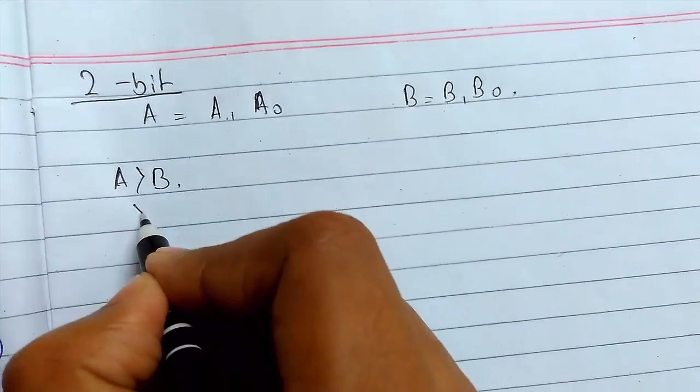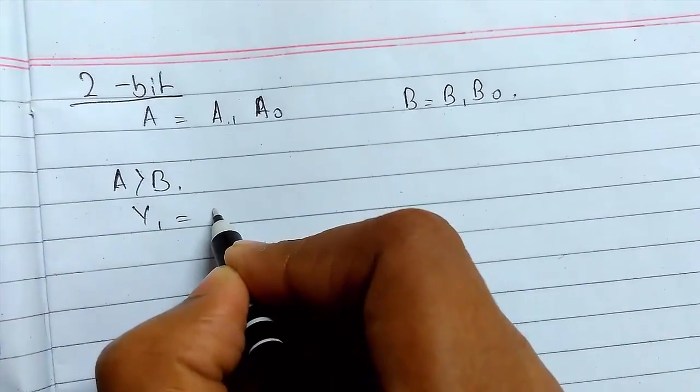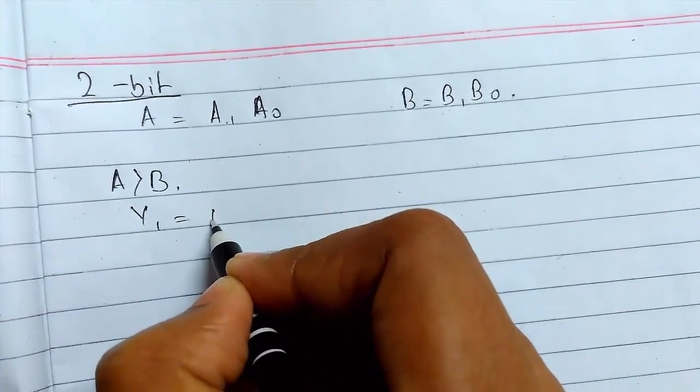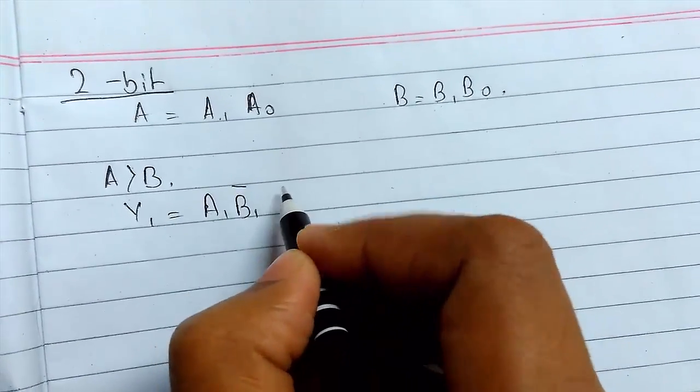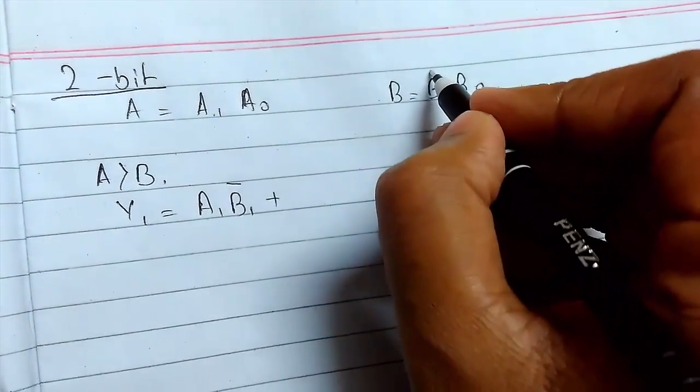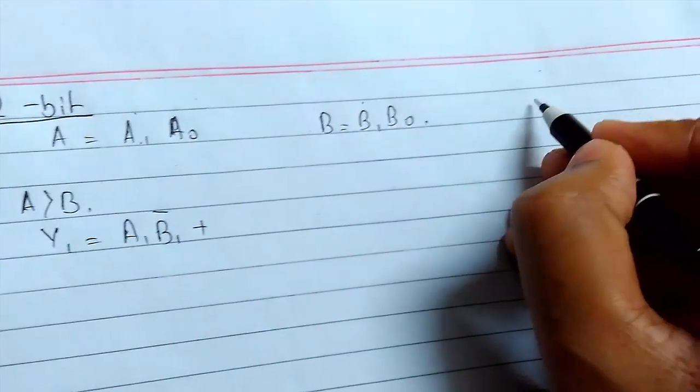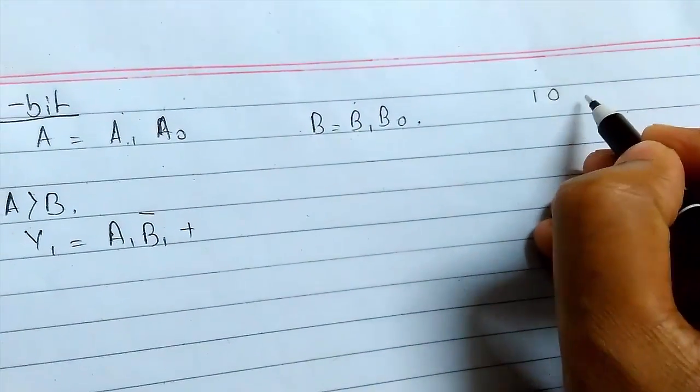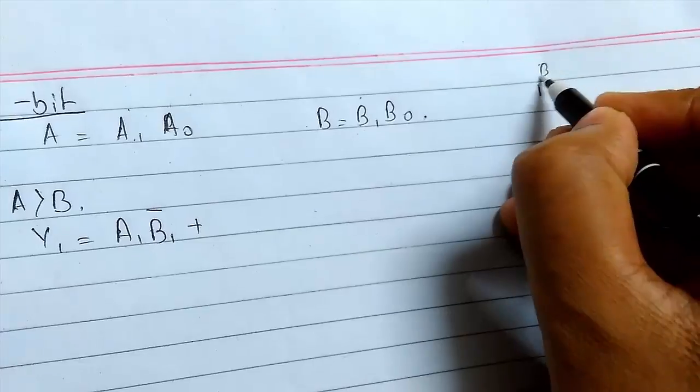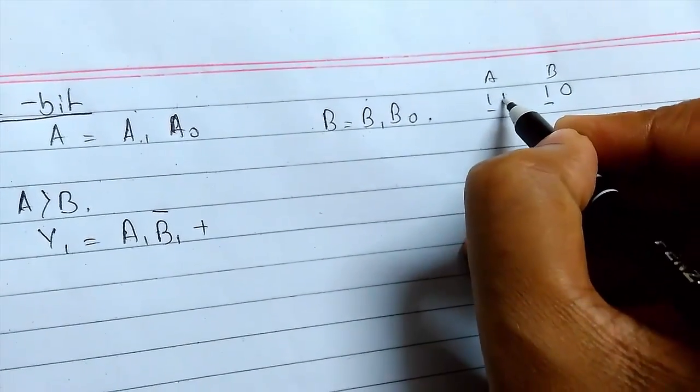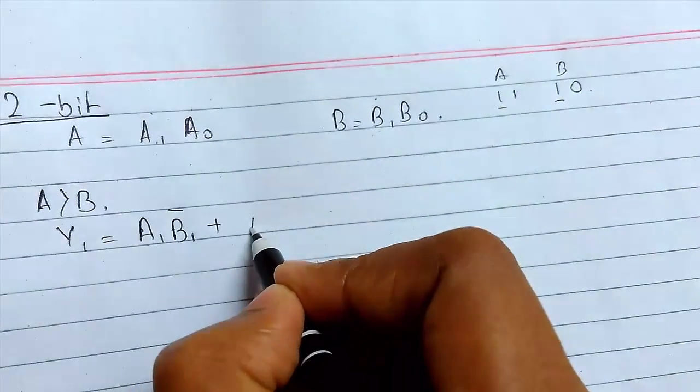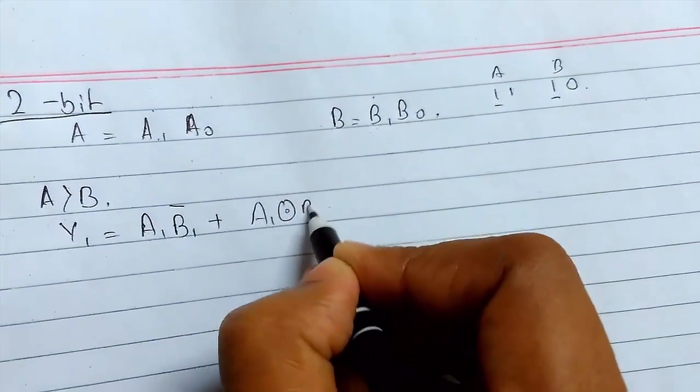For that, suppose for y1 we consider that A is greater than B. We can see that A1 is greater than B1, or the other case can happen like both the MSB are same, suppose like 10 for B and for A the MSB are same but the LSB is greater. So A1 XNOR B1, this will be ANDed with A0 AND B0 NOT.